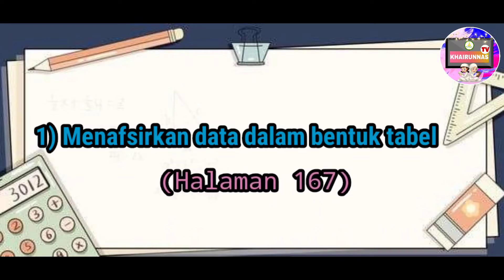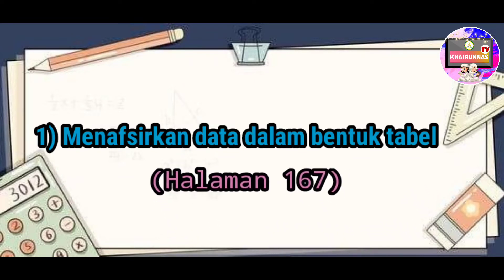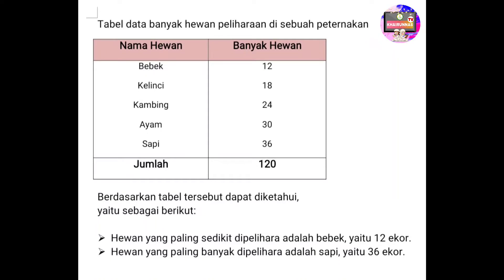Berikut adalah data banyak hewan peliharaan di sebuah peternakan. Berdasarkan tabel tersebut, dapat diketahui yaitu sebagai berikut: hewan yang paling sedikit dipelihara adalah bebek, yaitu 12 ekor. Hewan yang paling banyak dipelihara adalah sapi, yaitu 36 ekor. Dari tabel tersebut, kita dapat menafsirkan data seperti itu.